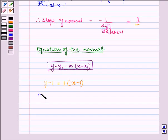That is y minus 1 equals x minus 1, which implies y minus 1 minus x plus 1 equals 0. So we are left with x minus y equals 0.